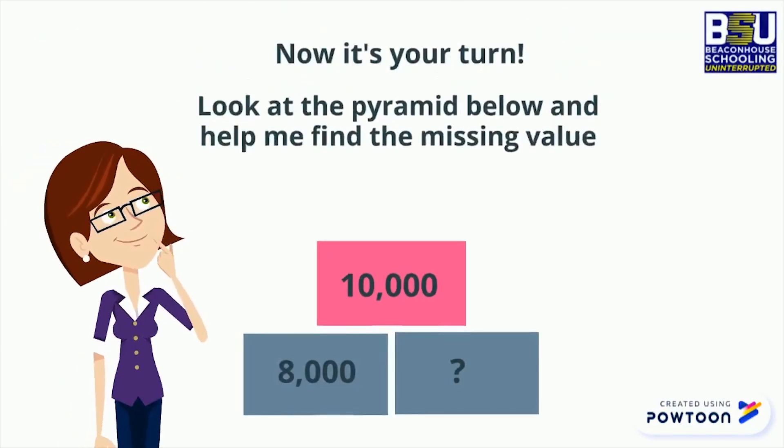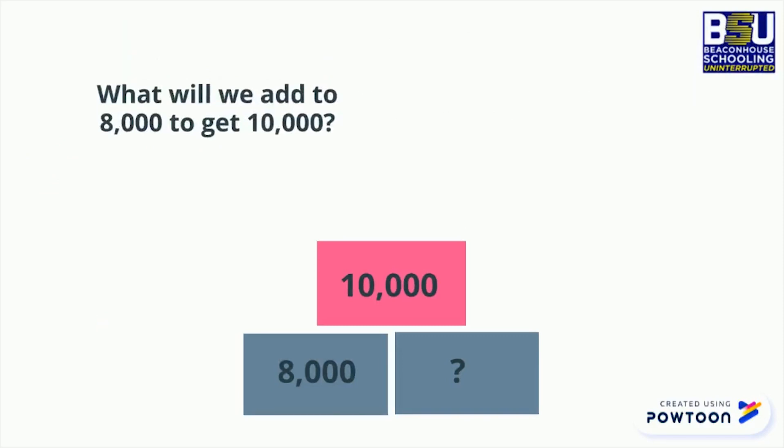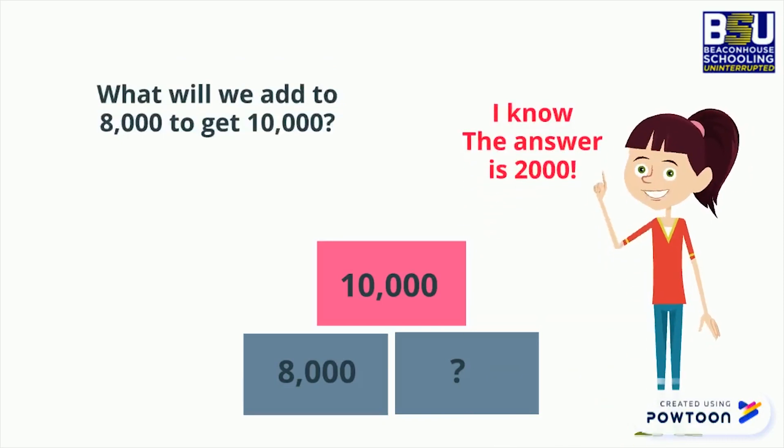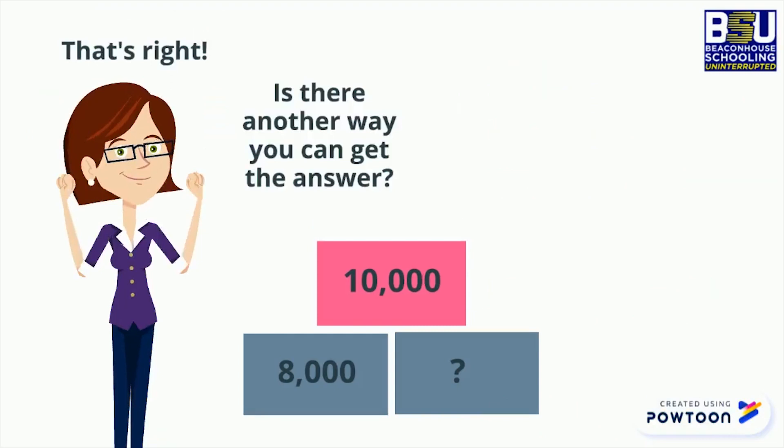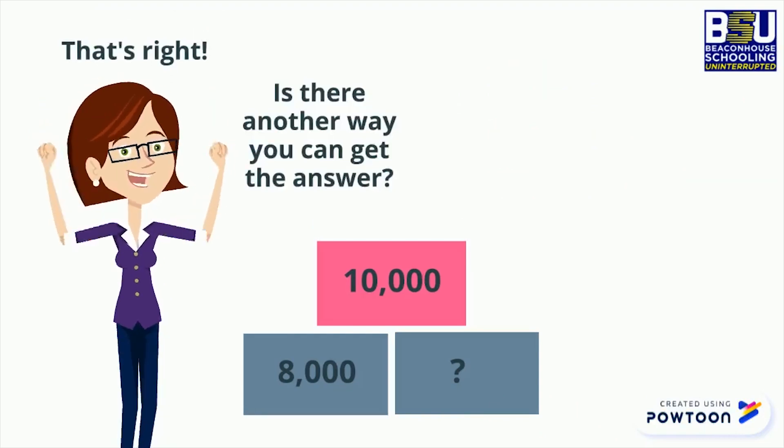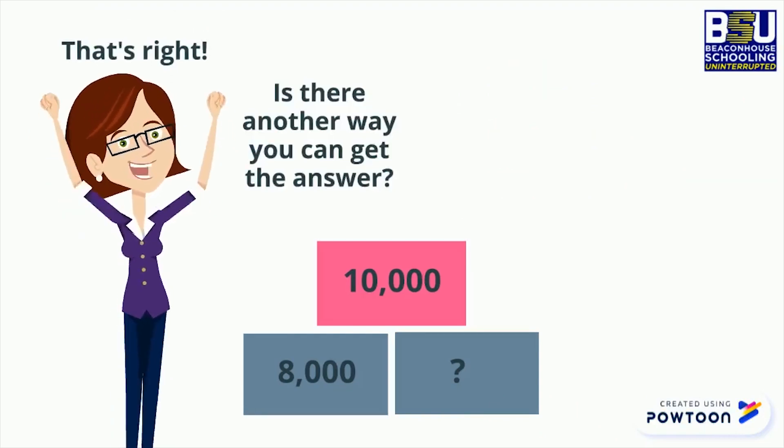What will we add to 8,000 to get 10,000? I know the answer is 2,000. That's right. Is there another way you can get the answer? How about we do this: 10,000 minus 8,000 equals 2,000.